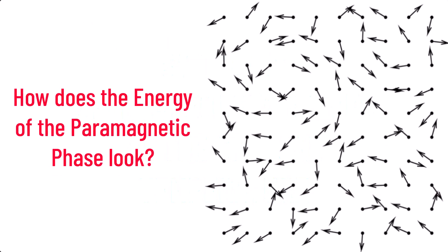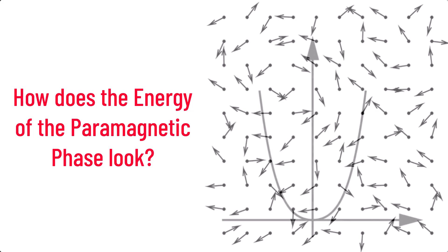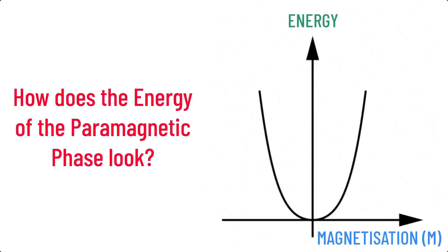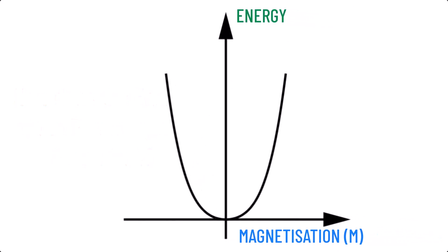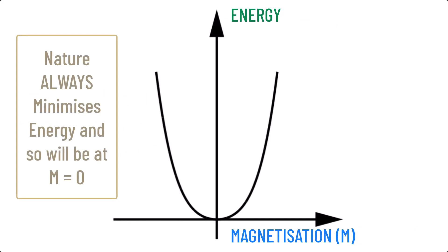Now let's examine what this means graphically. Going back to the paramagnetic phase, if I were to plot magnetization on the x-axis and free energy on the y-axis, the paramagnetic phase would look like this. A sort of single well shape, with the minimum at the origin of zero magnetization. Remember, I said nature loves to minimize energy, and so naturally, the state will be at zero magnetization, hence why it's a paramagnet.